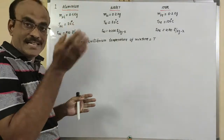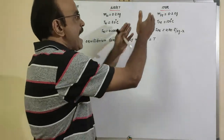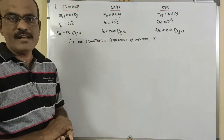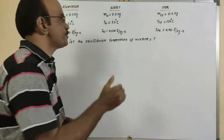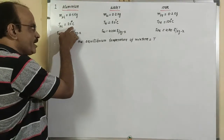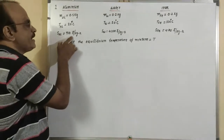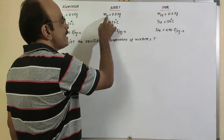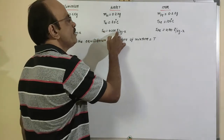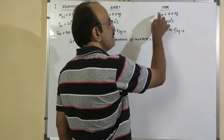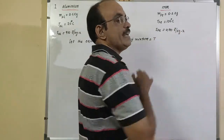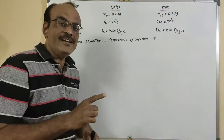Aluminum is a vessel inside which water is taken, then iron heated at 100 degrees centigrade is dropped into the aluminum vessel. The given values: mass of aluminum = 0.5 kg, temperature of aluminum = 20°C, specific heat of aluminum = 910 J/kg·K. Mass of water = 0.2 kg, temperature of water = 20°C, specific heat of water = 4200 J/kg·K.